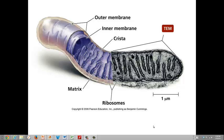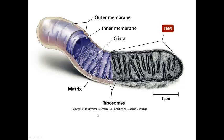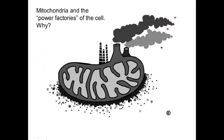This is a nice figure of a mitochondrion showing the outer and inner membranes, the matrix material bound by the inner membrane, the cristae, and ribosomes. It also shows both the transmission electron micrograph (TEM) view and a three-dimensional cartoon depiction. Mitochondria are referred to as the powerhouses, or power factories, of the cell, because they take chemical energy in bonds, break those bonds, and make ATP — the energy currency the cell uses to do cellular work.